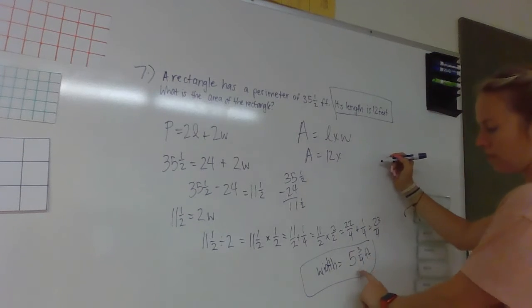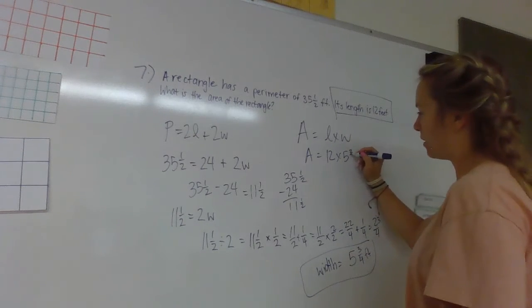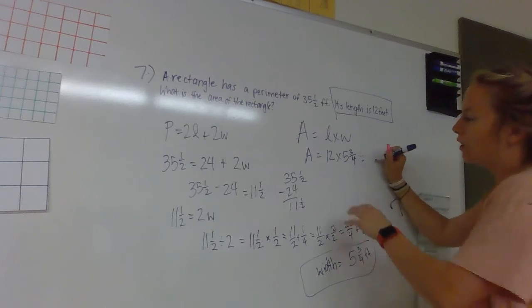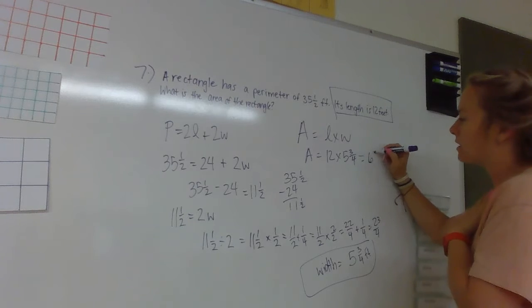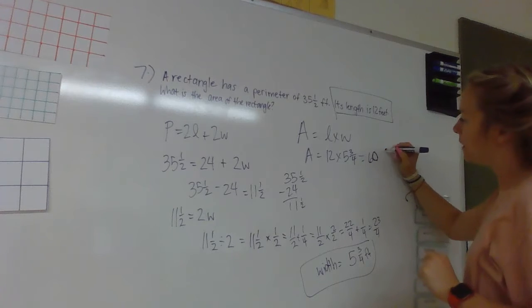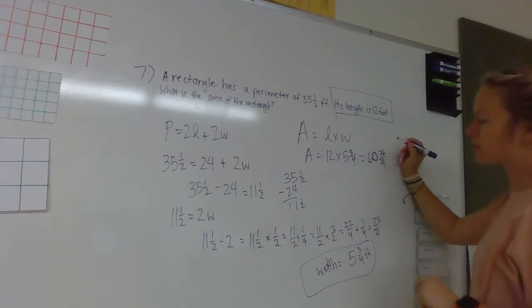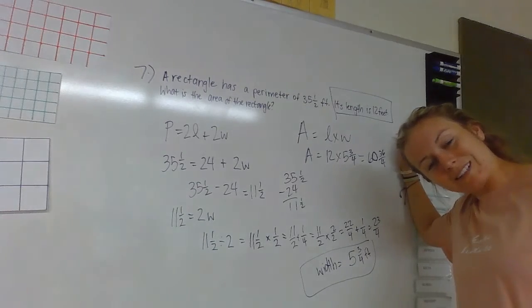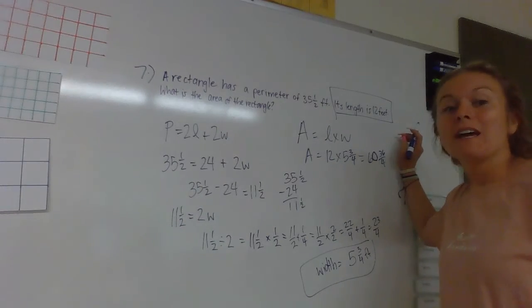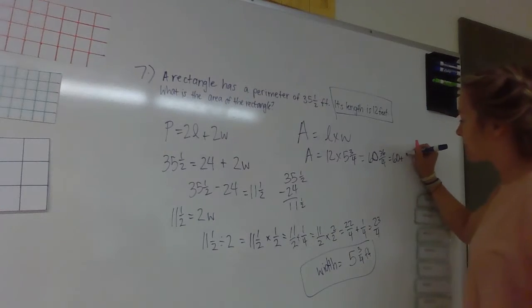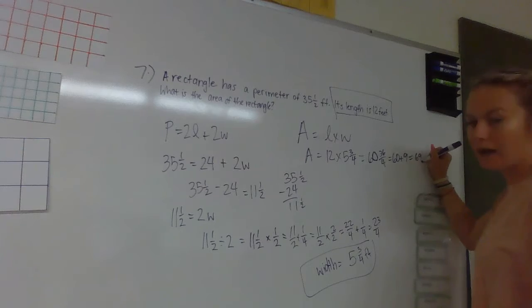A equals length is 12 feet, so 12 times W, our width is 5 and 3/4. Now from here I get to multiply: 12 times 5 is 60; 12 times 3/4 is going to be 36/4. How many times does 4 go into 36? It divides evenly and that would be 9. So it's 60 plus 9 which is 69 feet squared.